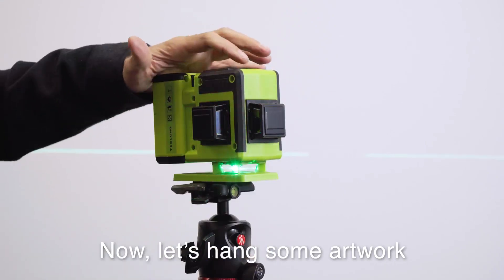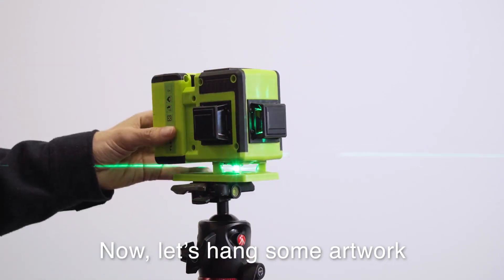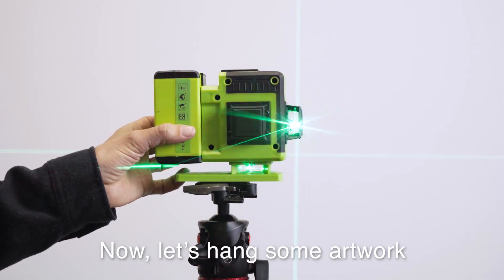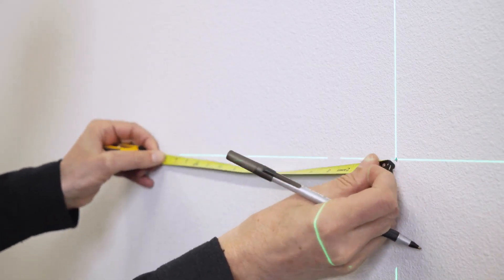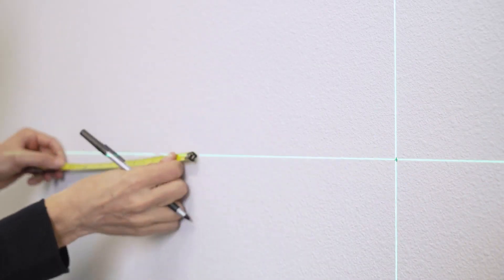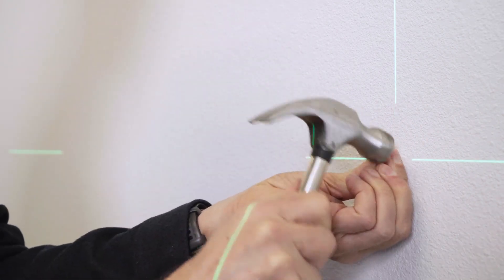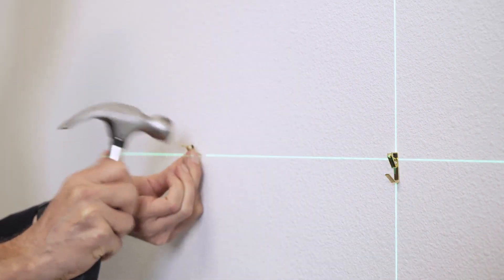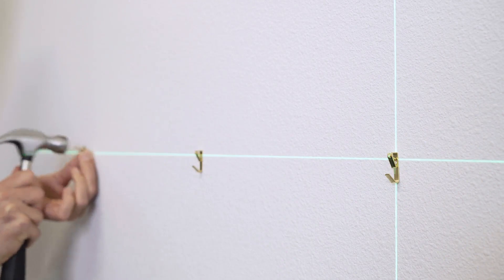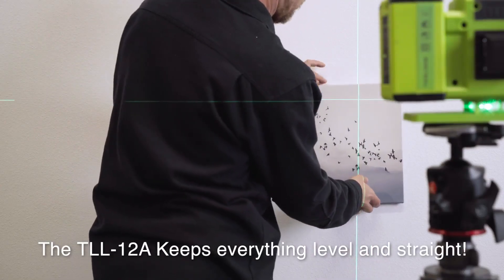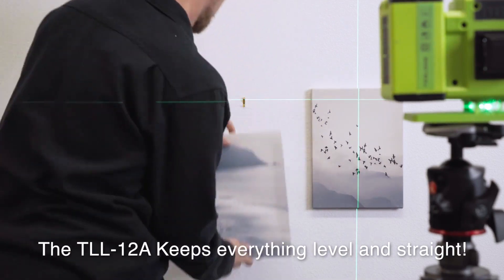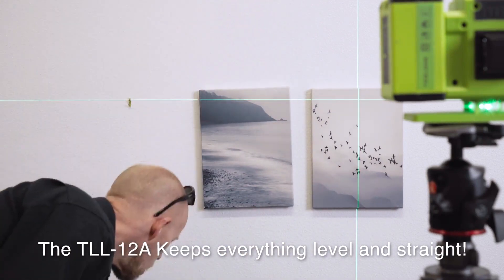Now let's hang some artwork. This is a great way to hang multiple frames and keep them all aligned on a wall without having to make a ton of measurements. Just get your laser line set at the right height, measure your spacing, and install your fasteners. Keep the laser level on to make sure your artwork is straight and you're good to go.